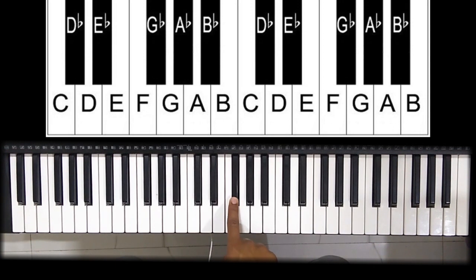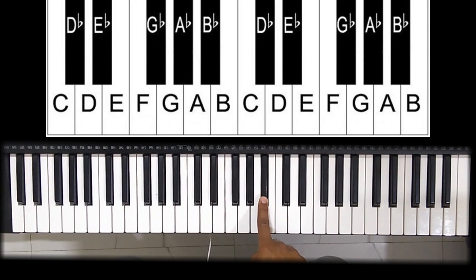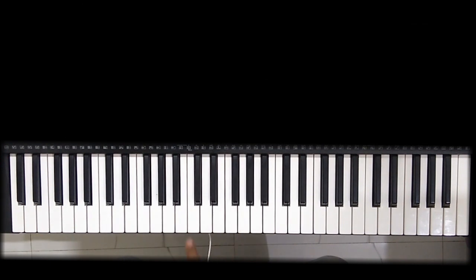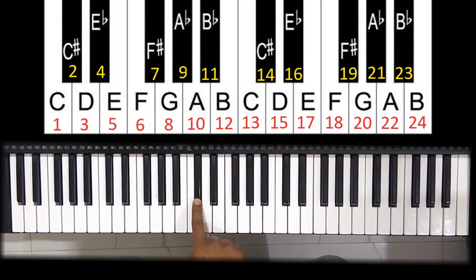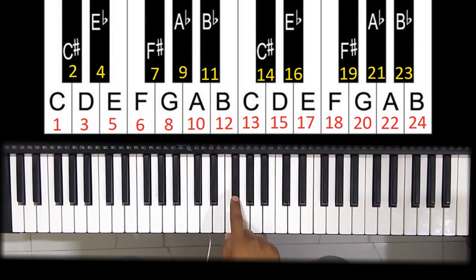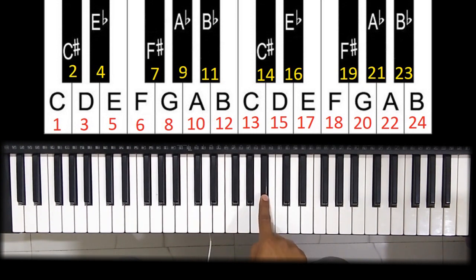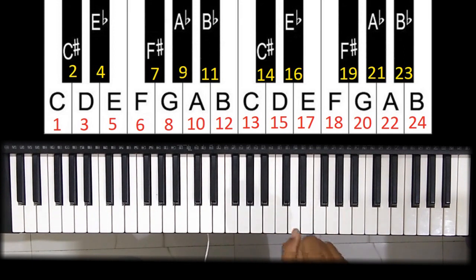Then we have G flat, which is the same as F sharp, then A flat, followed by B flat. Now let's number them: 1, 2, 3, 4, 5, 6, 7, 8, 9, 10, 11, 12, and then we come back to 13, and the count goes on in the same way.